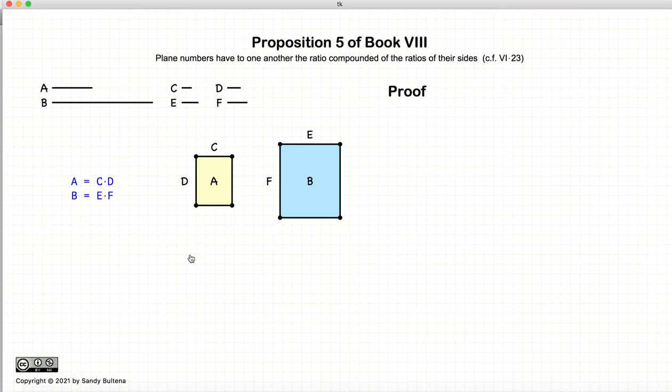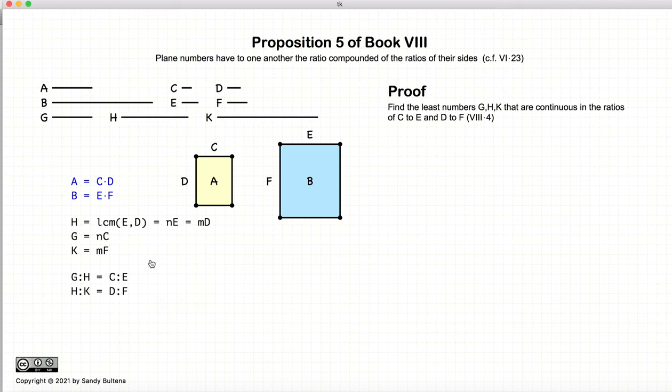So, let's start with our proof. What we're going to do is we're going to use the methods in the previous proposition, Proposition 4 of Book 8. And we are going to construct three numbers H, G, and K, such that G to H is equal to the ratio of C to E, and H to K is the ratio of D to F. And we did it by using this methodology, which again comes from the previous proposition.